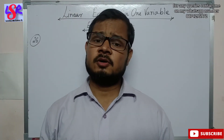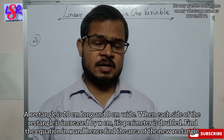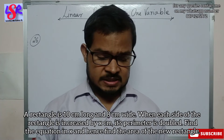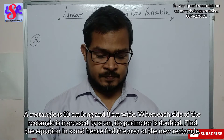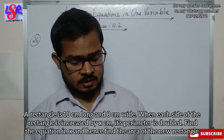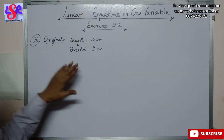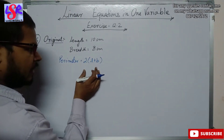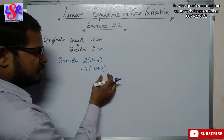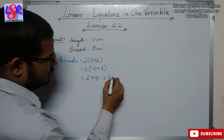Now let's move to question 26. A rectangle is 10 centimeters long and 8 centimeters wide. When each side of the rectangle is increased by x centimeters, its perimeter is doubled. Find the equation in x and hence find the area of the new rectangle. The original length is 10 cm and breadth is 8 cm. The original perimeter is 2(10 + 8) = 2 into 18 = 36 centimeters.